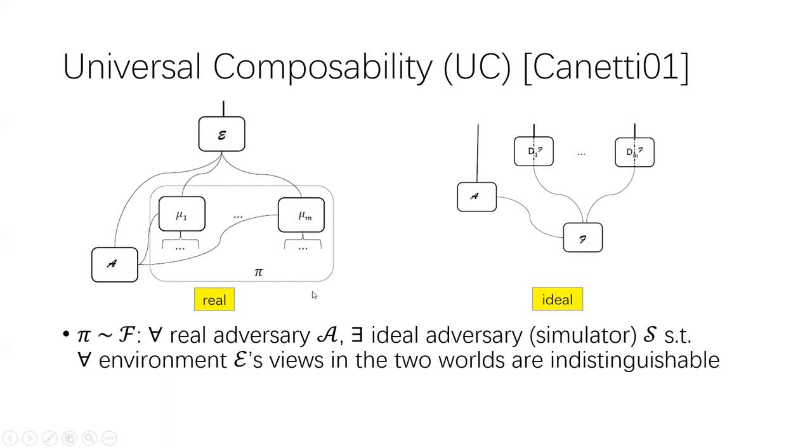One reason why UC is so powerful is the composition theorem, which says that if protocol Pi UC emulates an ideal functionality F, then a protocol which has Pi as a sub-protocol also UC emulates the protocol with Pi replaced with F. This allows for using the ideal functionality instead of a UC-secure protocol within a higher level protocol.